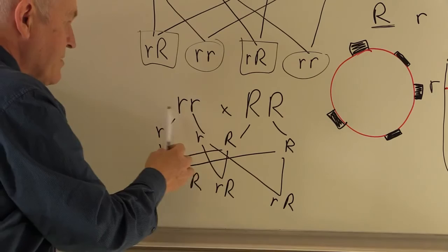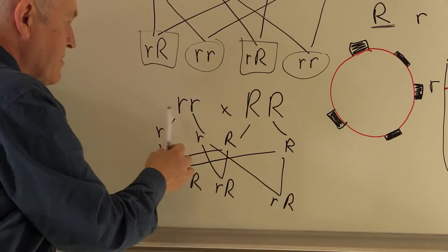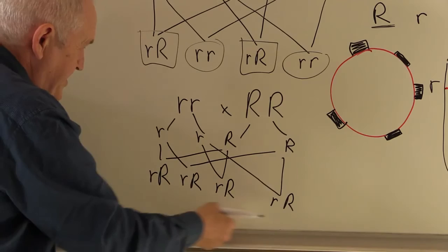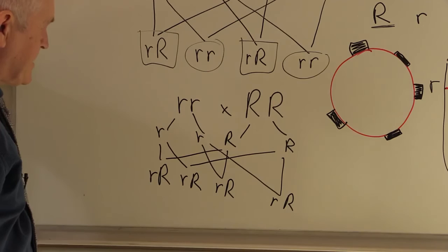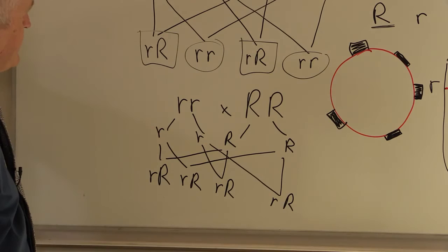So in this case, even though the mother is Rhesus negative, 100% of potential fetuses formed by this union would be Rhesus positive. Therefore, the probability of Rhesus factor incompatibility occurring is going to be high.